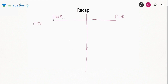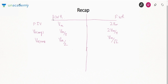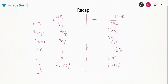For the half wave rectifier and center-tapped full wave rectifier, the parameters are: PIV was Vm and 2Vm respectively; V_out average was Vm/π and 2Vm/π; V_out RMS was Vm/2 and Vm/√2; form factor was π/2 and π/2√2; voltage ripple factor was 1.21 and 0.48; efficiency was 40.56% and 81.05%; and TUF was 0.286 and 0.69.